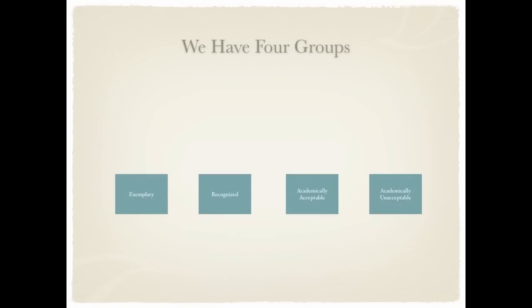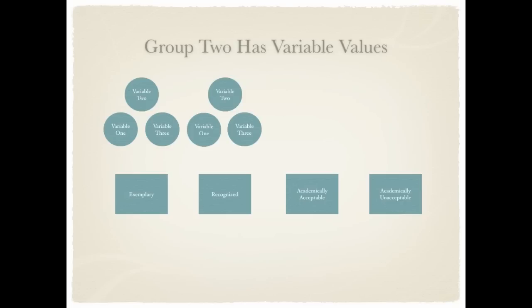We have four groups: Exemplary, Recognized, Academically Acceptable, and Academically Unacceptable. The Exemplary group has three variables—the same variables the others have—but there will be values in those for the districts that are exemplary: variable 1, variable 2, and variable 3. The Recognized District will have the values for those same variables: variables 1, 2, and 3.